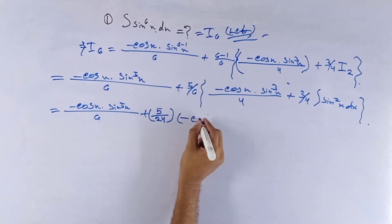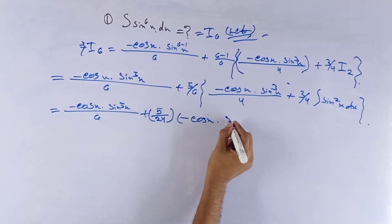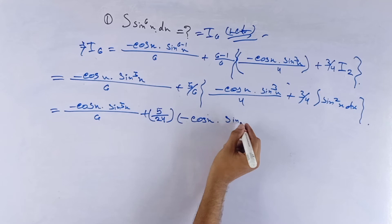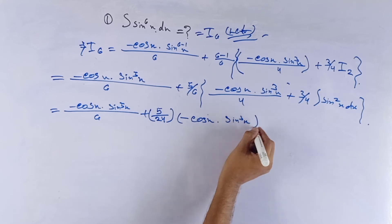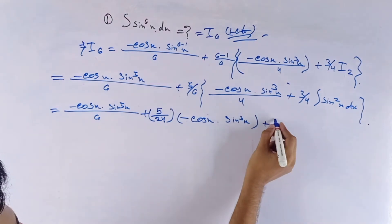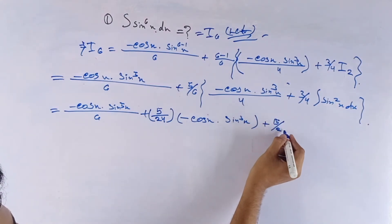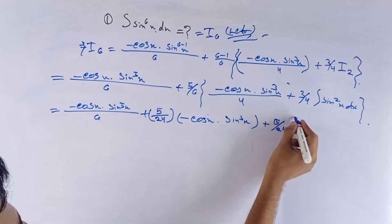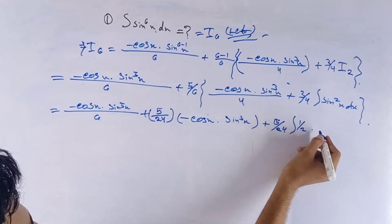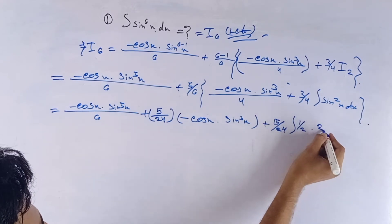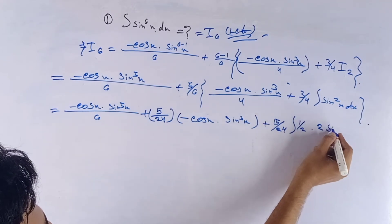That equals to minus cos x times sine to the power 5x by 6, plus 5 by 24 of minus cos x times sine to the power 3x.